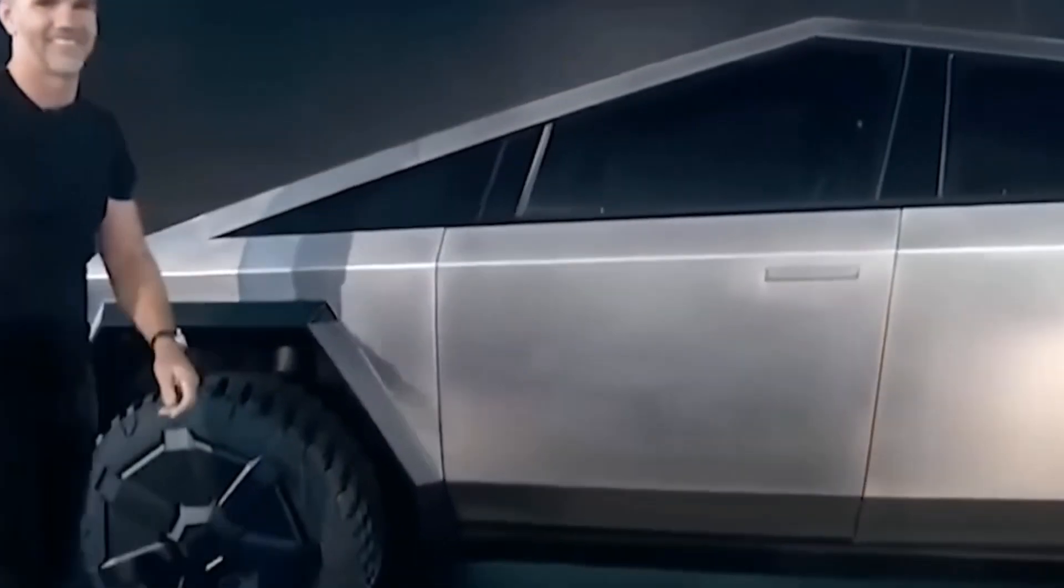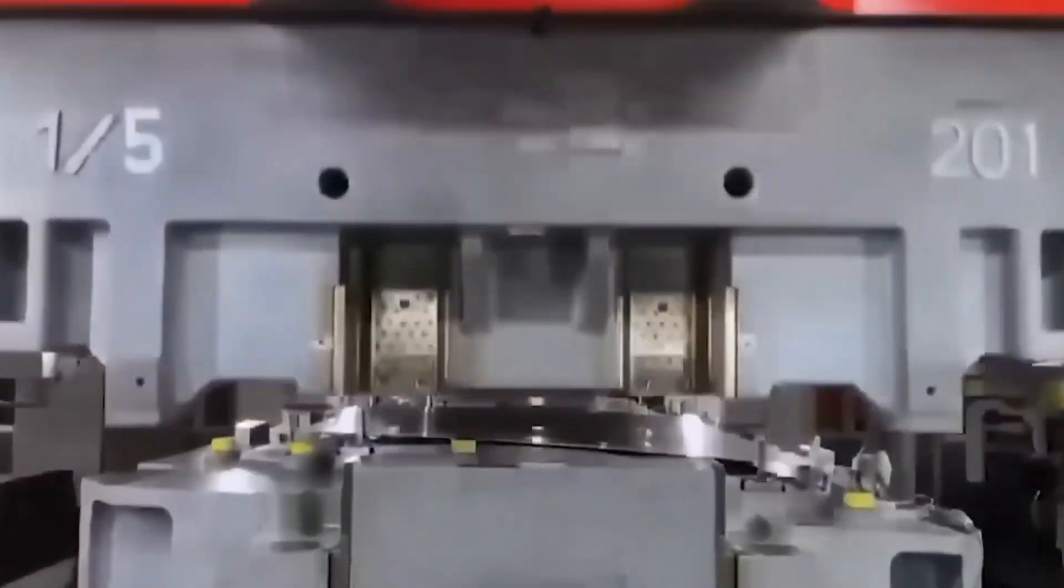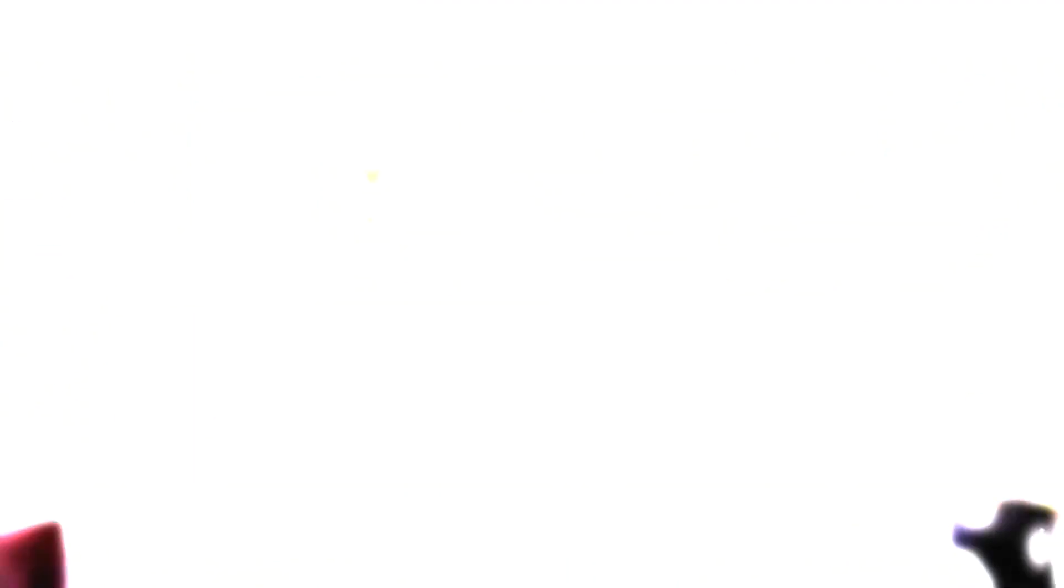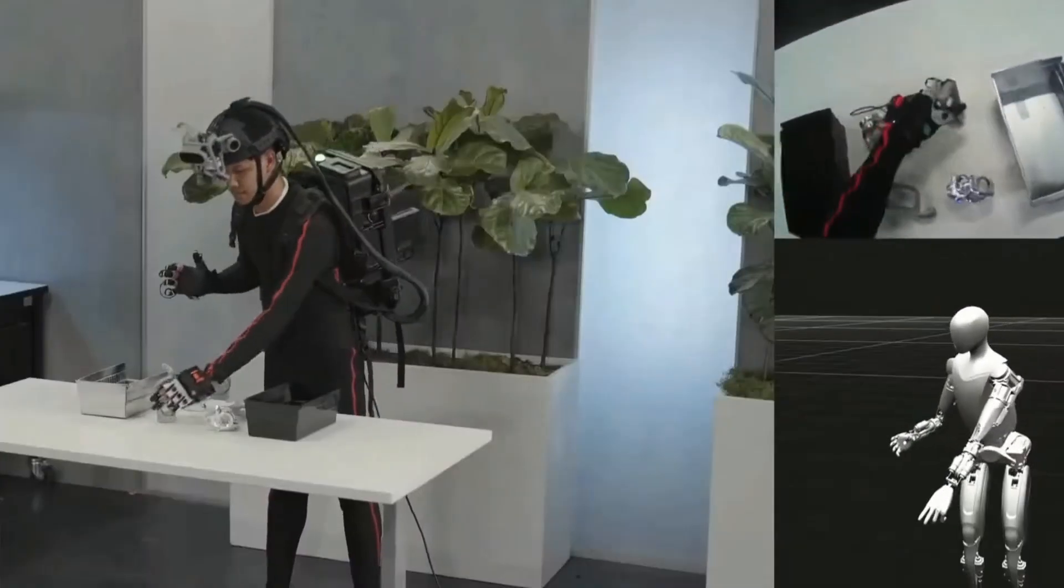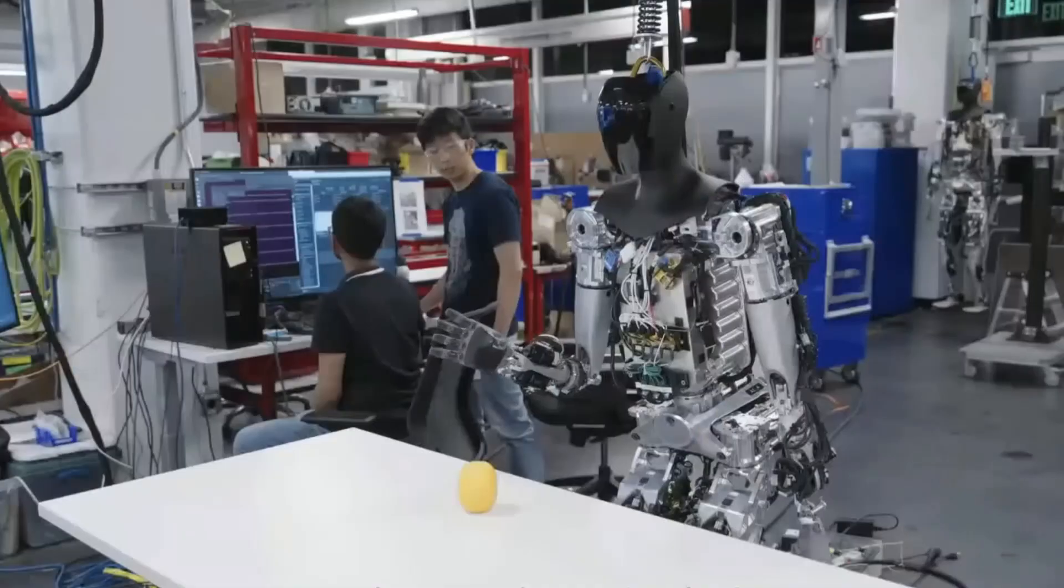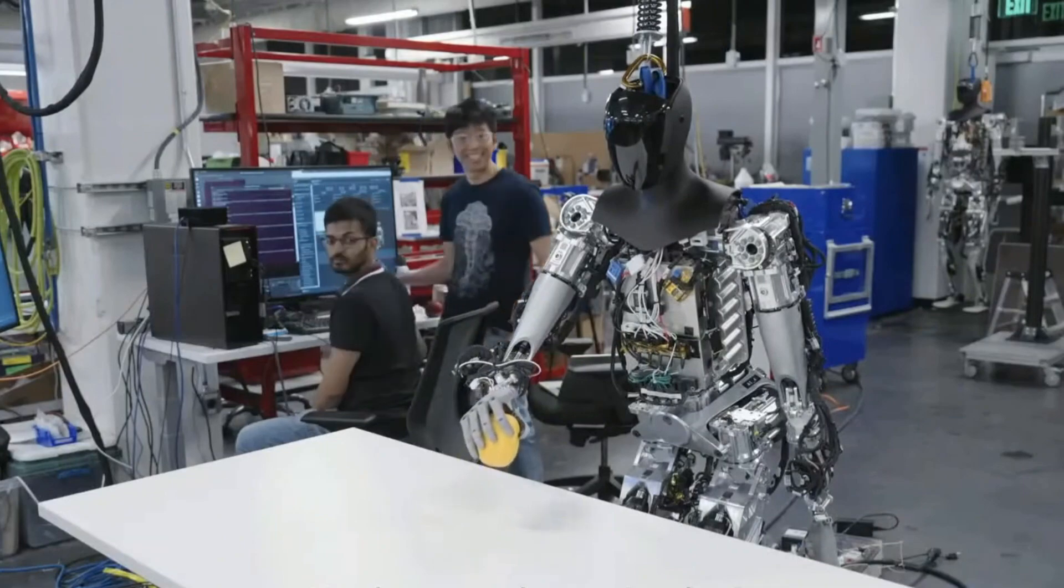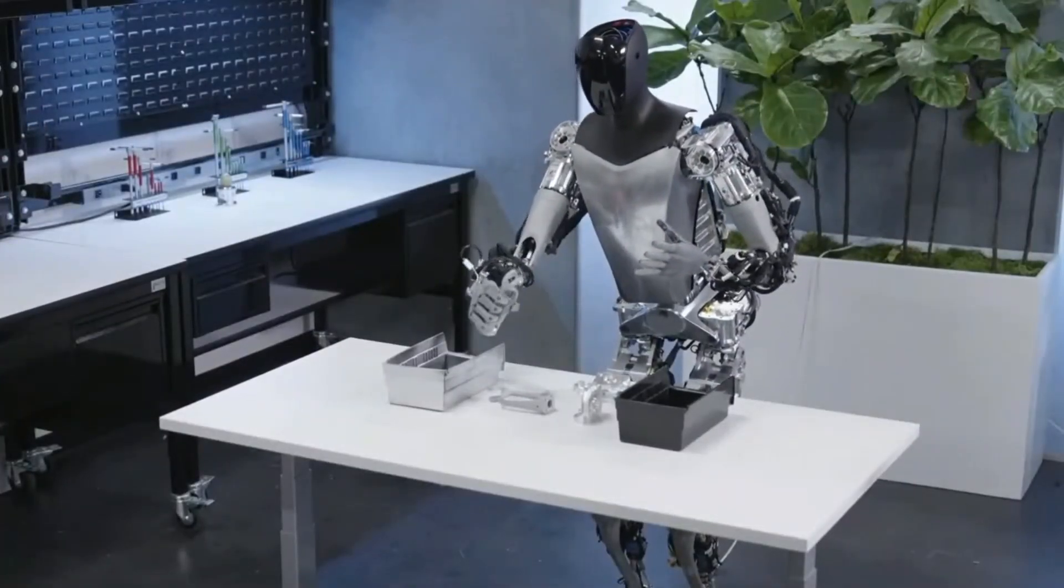Tesla, renowned for electric vehicles and clean energy, has yet again raised eyebrows with a significant update to the Optimus robot. Just a couple of months after their last update, they've introduced a robot that flaunts impressive advancements in the world of robotics. But what exactly is Optimus? It's not your average machine, it's a humanoid wonder designed to shake up industries.